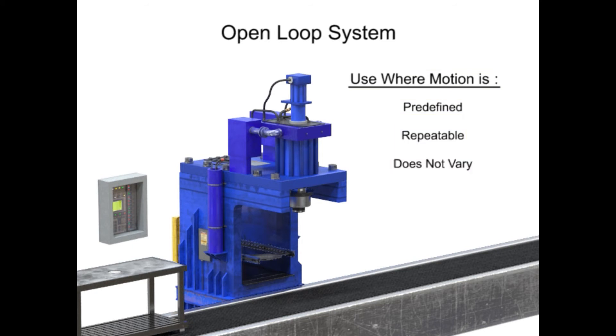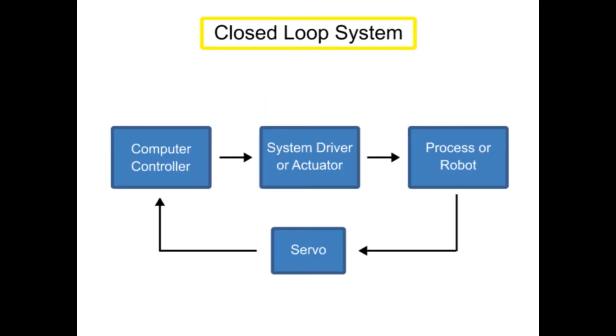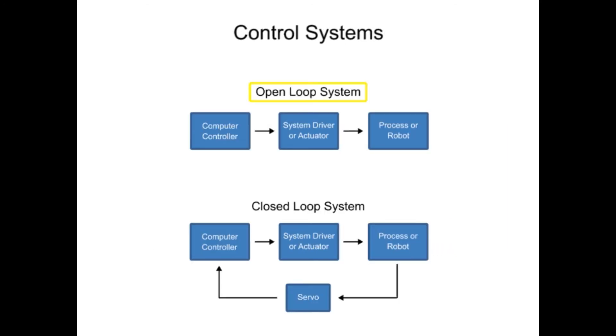The second type of control system is called closed-loop control or servo control. A servo is a device that uses error-sensing feedback to control the motion of another device. The primary difference in an open versus closed-loop system is the addition of a feedback loop that allows the controller to make adjustments to the robot.